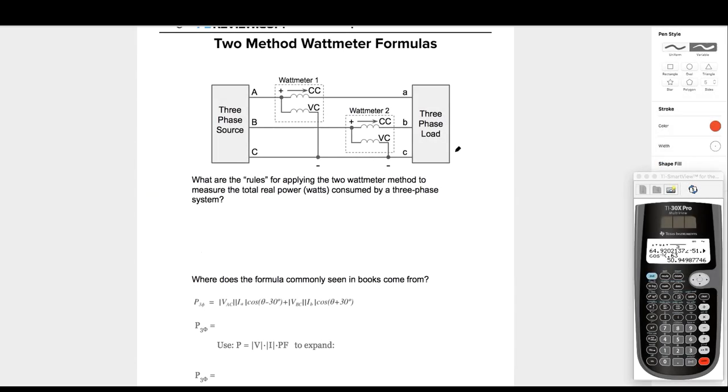Two-method wattmeter formulas. Who can tell me? I'm going to switch over to a text box. Who can tell me, what are the rules? What are the rules for a two-method wattmeter? In other words, if I only have two wattmeters and I want to measure the power in watts of a three-phase unbalanced system, what are three things that I must follow?